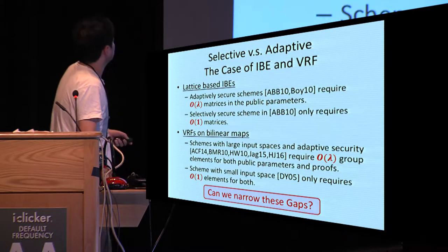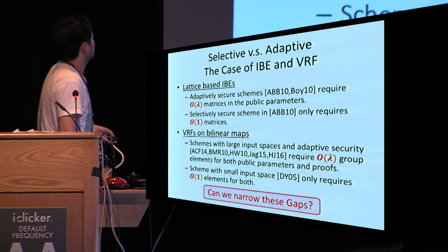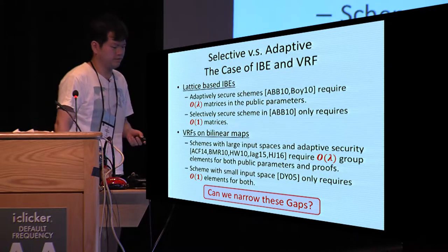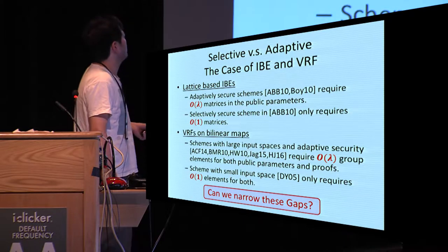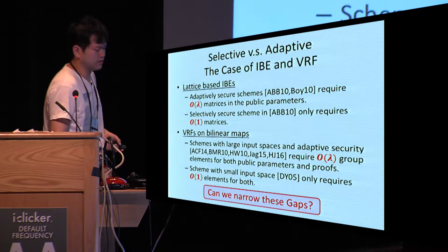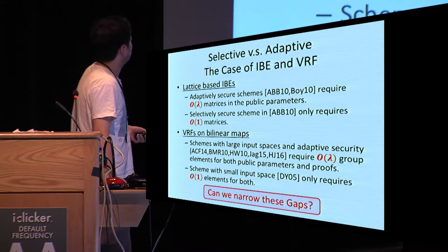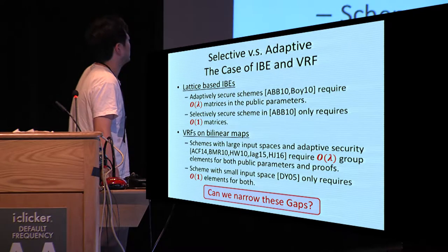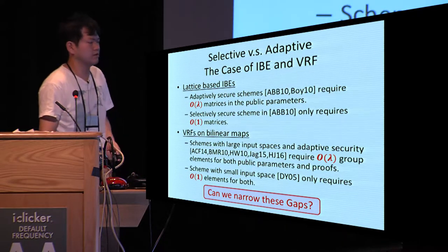Let us take a look at the case of lattice-based IBE schemes. We have adaptively secure lattice IBE schemes. However, these schemes require order of lambda matrices in the master public key. On the other hand, we have very efficient selectively secure schemes that require only a constant number of matrices in the master public key.